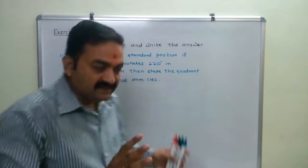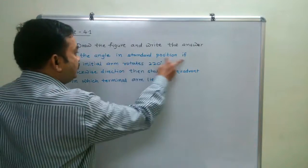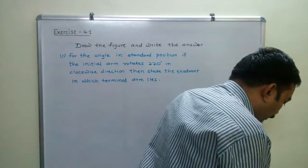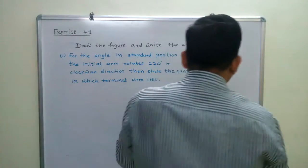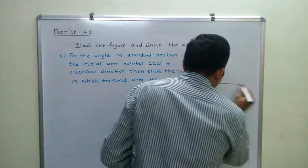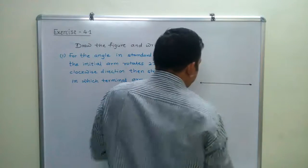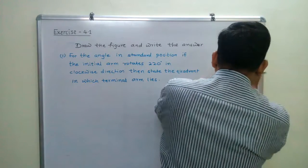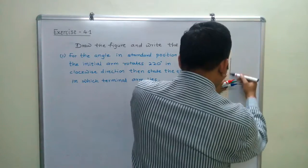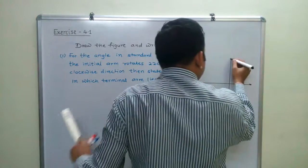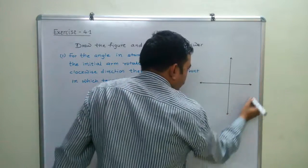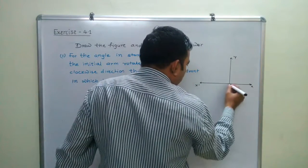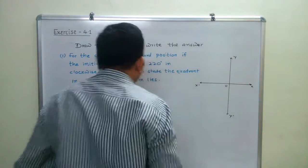What we have to do: it is given that the angle is in the standard position. So first of all, we will draw the x and y axes — labeling x, x-dash, y, y-dash, and the origin.